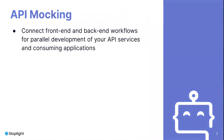With Stoplight's API mocking features, you can instantly create a mock version of your API based on your OpenAPI specifications. This allows you to visualize and get feedback on your API designs before spending time on back-end service development. API mocking also allows your front-end client application developers and back-end services development teams to develop their projects in parallel.